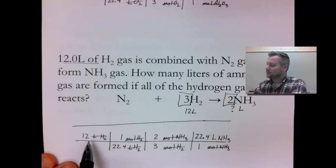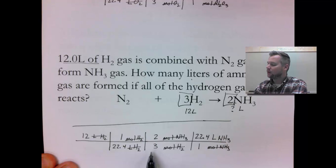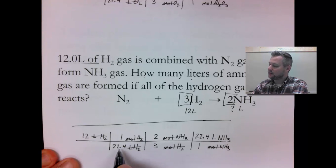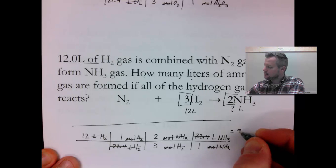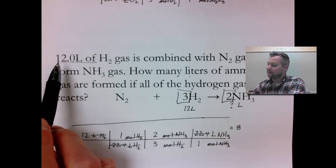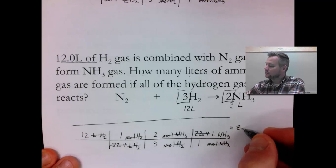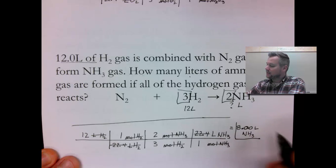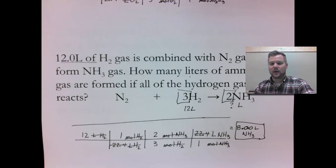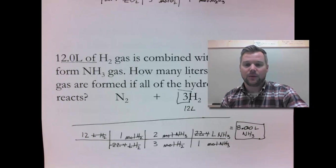Math-wise: 12 times 2 times 22.4 divided by, in parentheses, 22.4 times 3. Or if you're keeping track algebraically, the 22.4s cancel, so it's 12 times 2 divided by 3. My calculator gives me 8 liters. But I need 3 sig figs, so I need to add 2 zeros. Your calculator only gives you 8, but you need to recognize that 12.0 has 3 sig figs, so you need to add zeros to the end of that number. Box that so we can find it, and that was a volume-to-volume problem.